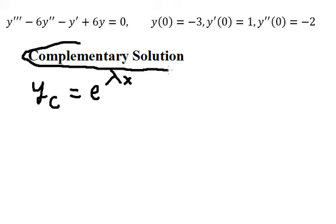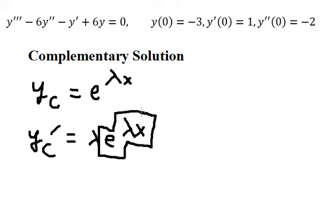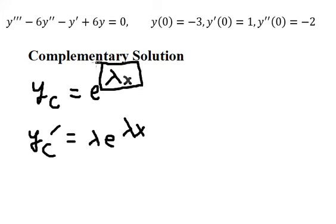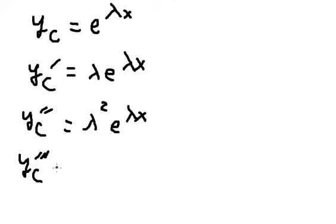We take the first derivative of yc and get lambda e to the power of lambda x. For the first derivative, we keep e to the power of lambda x and differentiate lambda x to get lambda. Then the second derivative of yc gives lambda squared e to the power of lambda x, and the third derivative gives lambda cubed e to the power of lambda x.